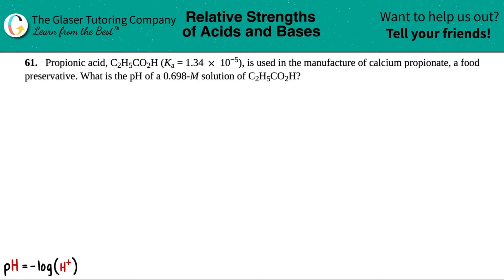Number 61. Propionic acid, C2H5CO2H, with a Ka value of 1.34 times 10 to the negative fifth, is used in the manufacture of calcium propionate, a food preservative. What is the pH of a 0.698 molar solution of C2H5CO2H?